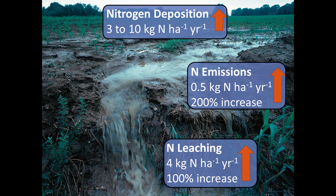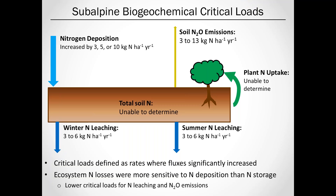Tying this all back to defining a critical load: with increased deposition between 3 to 10 kilograms of N per hectare per year, we were unable to determine critical loads for the total soil N pool or the plant N uptake. That may be because these pools are so large that the small amount of nitrogen I applied didn't have a large impact in such a short study — a long-term chronic study might start to see some impacts. However, the nitrogen emissions were much more sensitive to deposition, with a critical load being defined for nitrous oxide emissions between 3 to 13 kilograms of N per hectare per year, and a critical load for leaching in both winter and summer between 3 to 6 kilograms of N per hectare per year. So you start to see detrimental impacts at rates slightly above what we're already receiving in the Cascades and other parts of the Northwest.